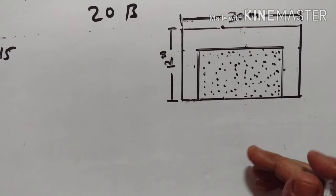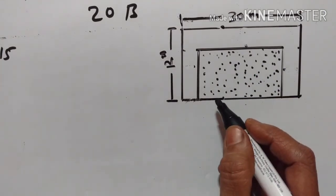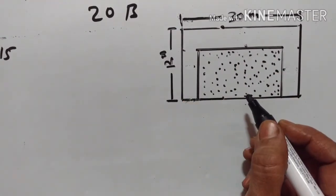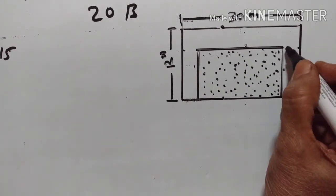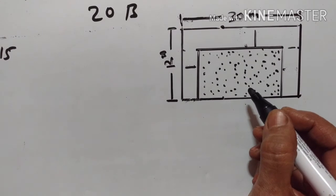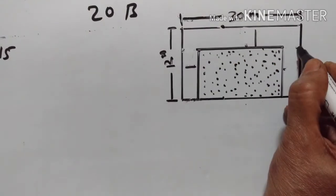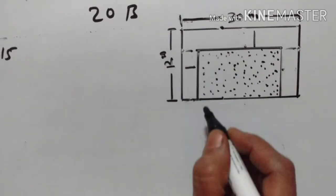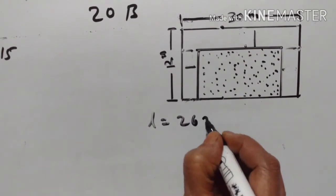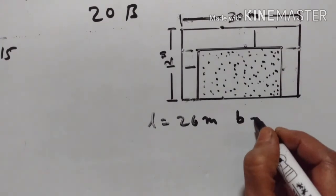15th problem. The shaded region of the given diagram represents the lawn in the form of a house. Of the three sides of the lawn, there are flower beds having a uniform width of 2 meters. Find the length and breadth of the lawn. The length of this lawn — from here to here it is 30 — is 30 minus 2 minus 2, which is 30 minus 4, equals 26. Length is equal to 26 meters. Breadth, from here to here it is 12, is 12 minus 2, equals 10 meters.